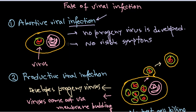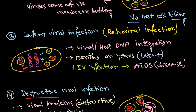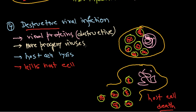To summarize, there are four types: first, abortive — no problem at all; second, productive — progeny viruses are released by budding, producing enveloped viruses without killing the host cell; third, latent — common in retroviruses like HIV, where viral genome integrates with host genome and stays for months or years before turning infectious; and fourth, destructive or lethal — host cells are killed by the release of progeny viruses and secretion of host cell destructive materials.